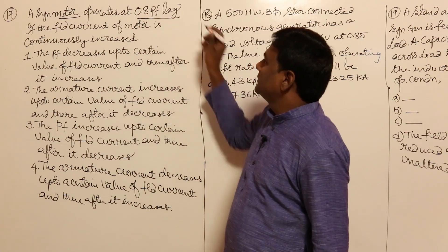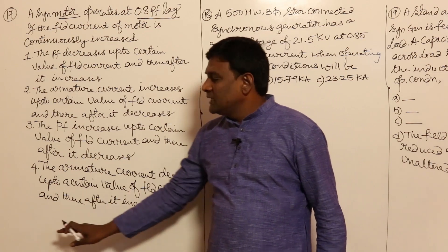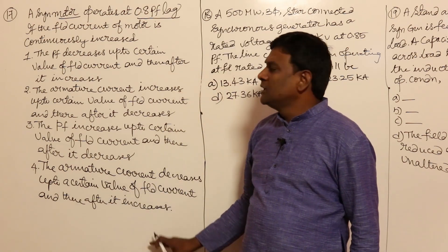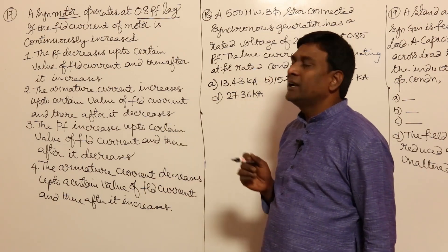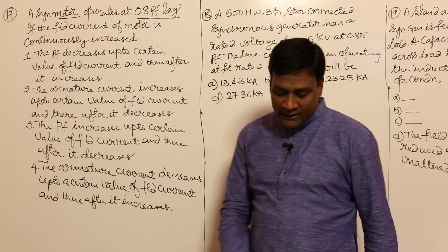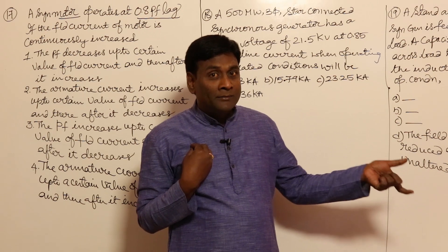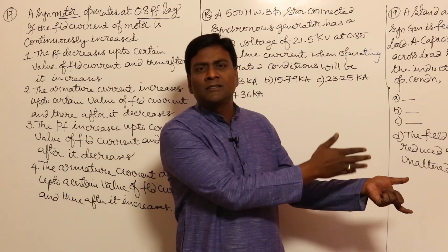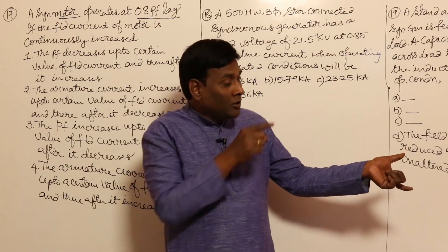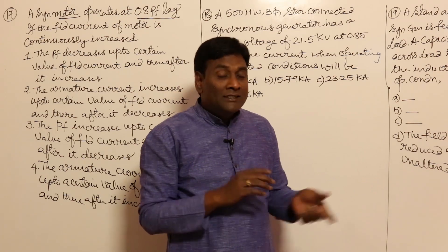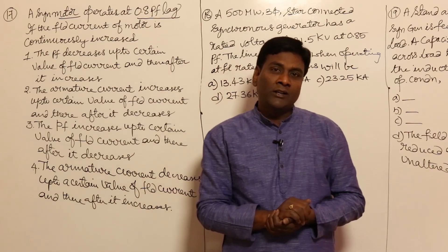Let us see how to solve this: a synchronous motor operates at 0.8 pf lag. If the field current of the motor is continuously increased, they have given statements one, two, three, four in combinations A, B, C, D. Let us analyze. Our notation is generator-motor. So the motor, with some resistance-inductance or resistance-capacitance, is operating at lagging power factor.